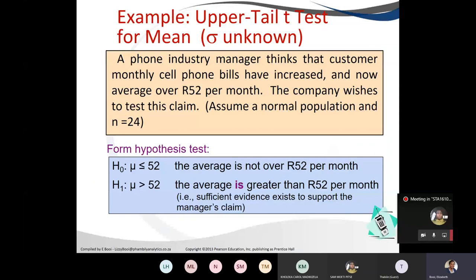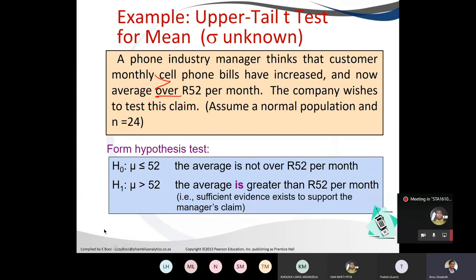Let's look at when we do a one-tail test. A phone industry manager thinks that customer monthly cell phone bills have increased and now average over 52,000 per month — 'over' is our keyword, meaning greater than. The company wishes to test this. Since this is what the researcher wants to prove, it goes in the alternative hypothesis: H1: mean greater than 52. H0: mean less than or equal to 52.